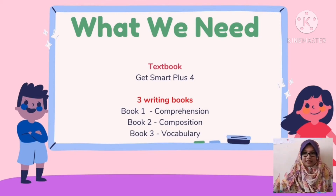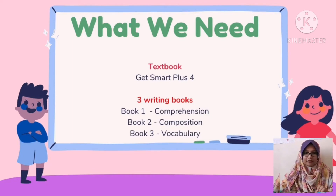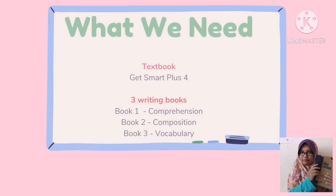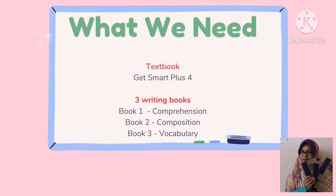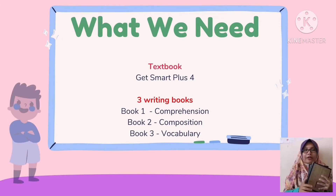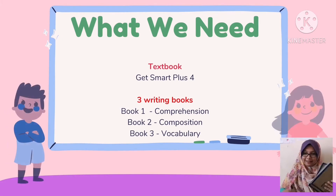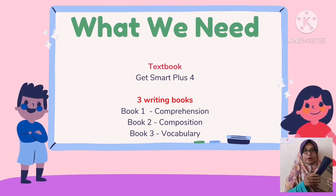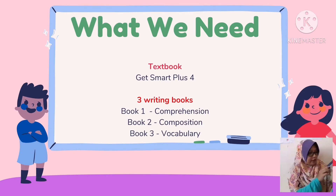Next, get three writing books ready. This is how a writing book looks like — I'm sure everyone has this. Please get three books ready for our English lesson. The first book is for comprehension. You can write on the mata pelajaran here: the first book is English Book 1 Comprehension.